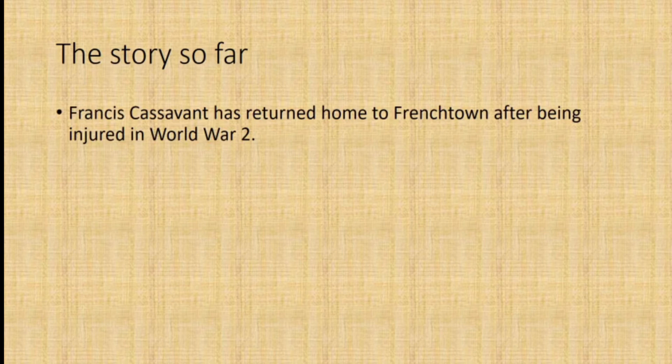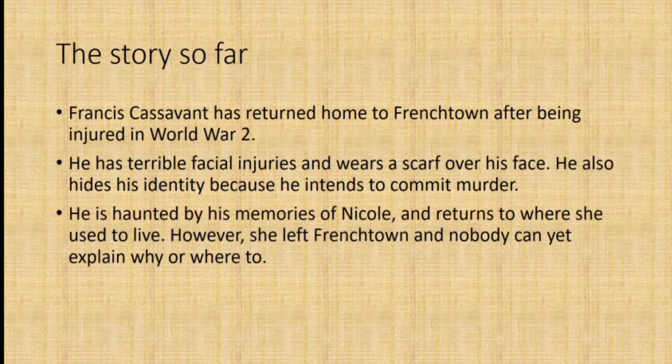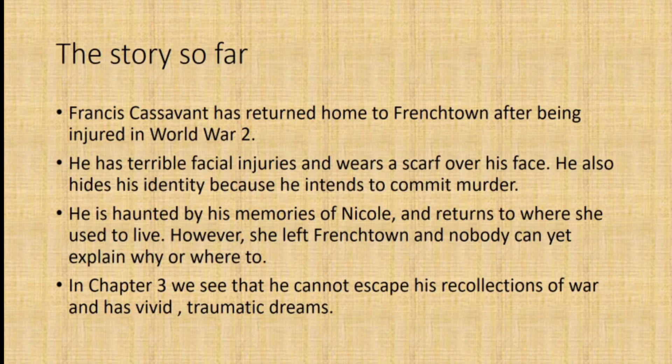Now, before we go on to the main task, let's have a quick recap of the story so far. In Heroes, Francis Cassavon has returned home to Frenchtown after being injured in World War II. He has terrible facial injuries and wears a scarf over his face. He also hides his identity because he intends to commit murder. He's haunted by his memories of Nicole and returns to where she used to live; however, she has left Frenchtown. In chapter three, part two — the part you read last lesson — we can see that he cannot escape his recollection of war and he has vivid, traumatic dreams.